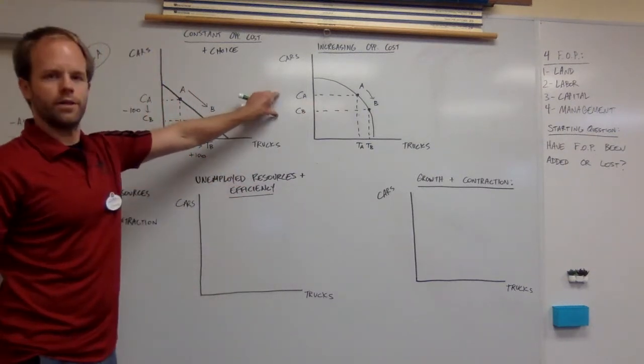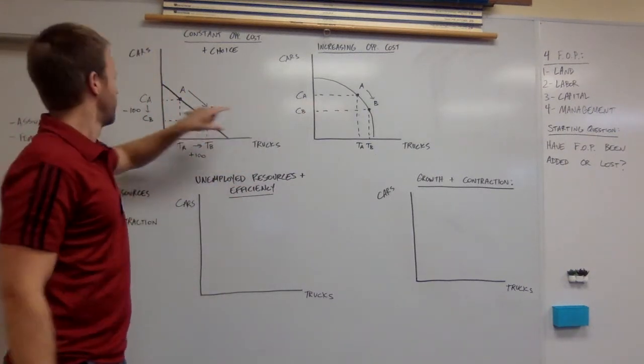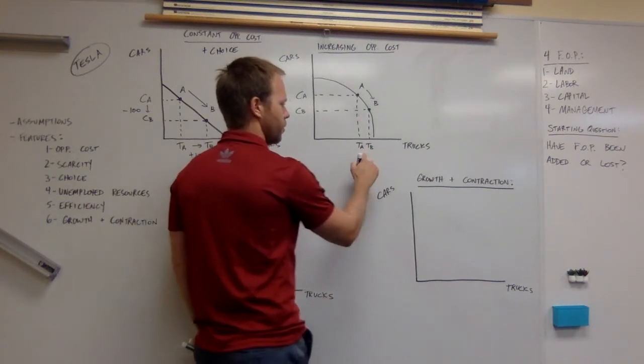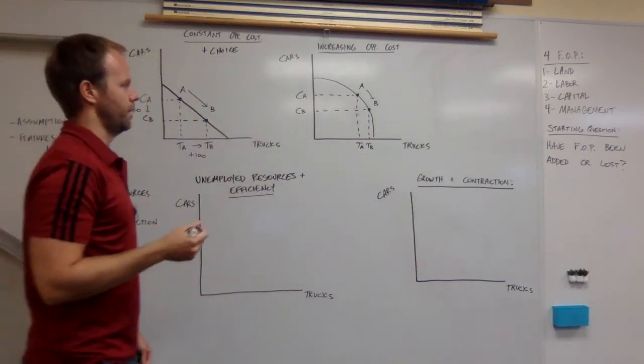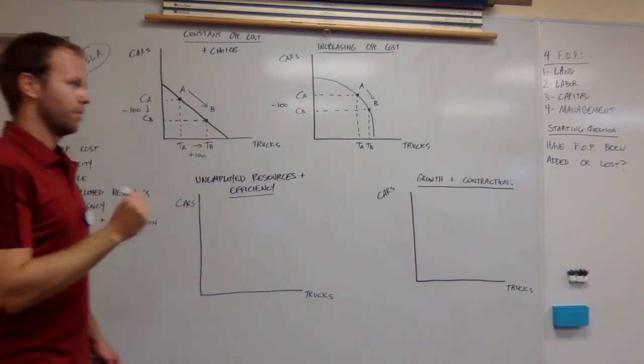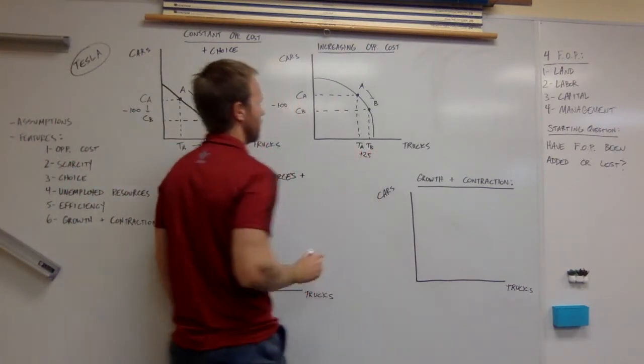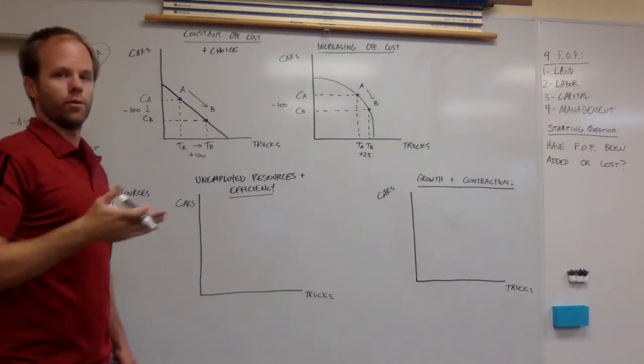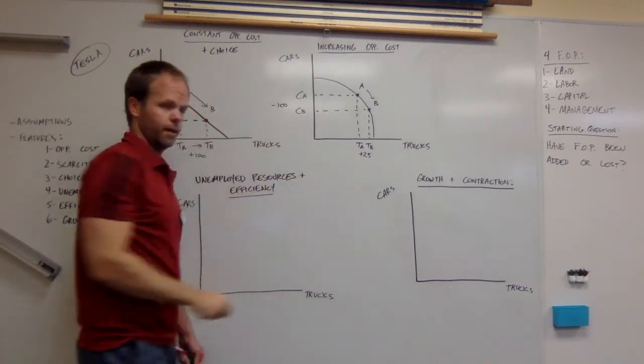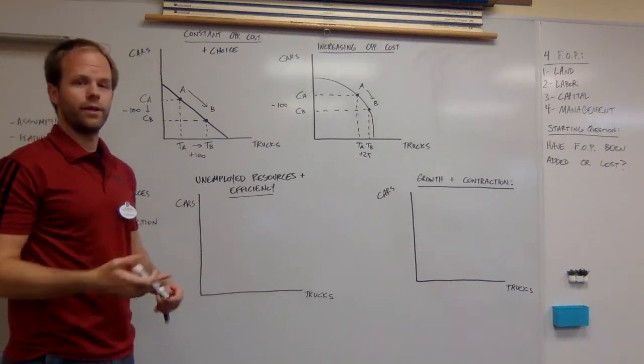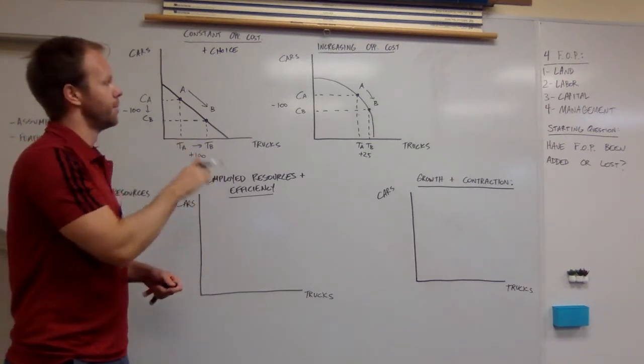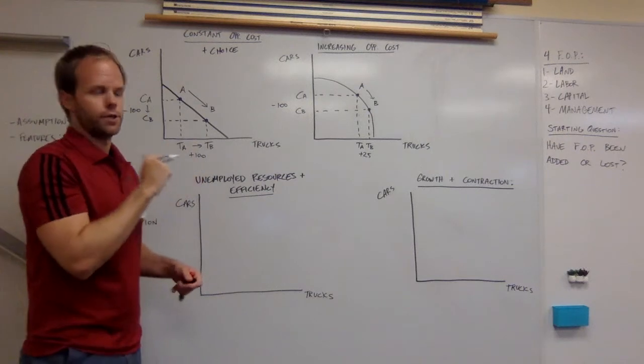You'll notice that the opportunity cost is about the same, maybe a little bit smaller than our first diagram that we drew here. But you'll notice they've only gained a few more trucks. They've had to give up maybe the same amount to make maybe only 25 more trucks. In this case, the ratio of their opportunity cost has changed. They've had to give up the same amount to only get a little bit more. That's increasing opportunity cost.